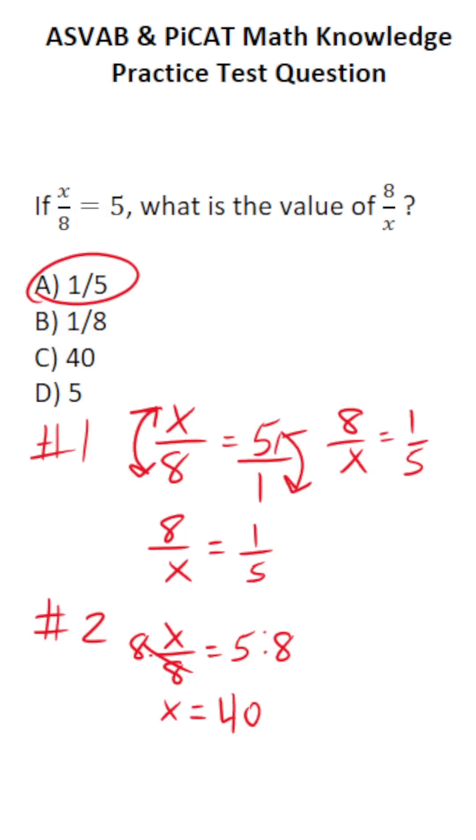We want to know the value of 8 over x. We now know that x is 40, so this is 8 over 40, which we can reduce by a common factor of 8. 8 divided by 8 is 1. 40 divided by 8 is 5.